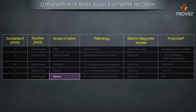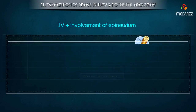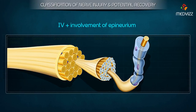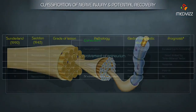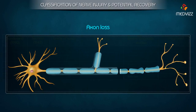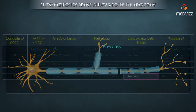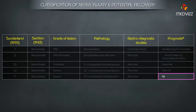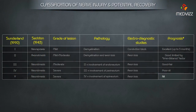Grade 5 of the Sunderland Classification corresponds to Neurotmesis of the Seddon Classification. The grade of lesion is severe. Pathology is Grade 4 plus involvement of the epineurium. Electrodiagnostic studies show axon loss. Prognosis is nil.